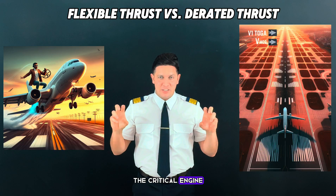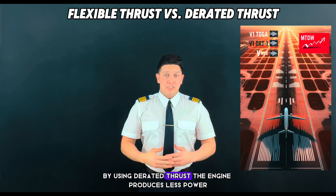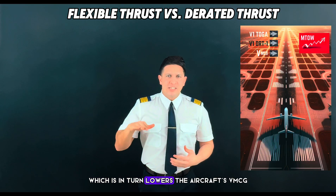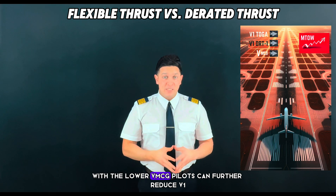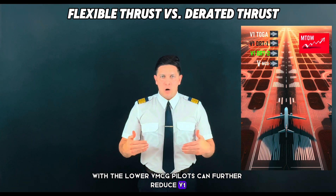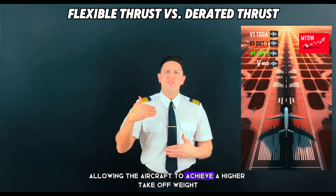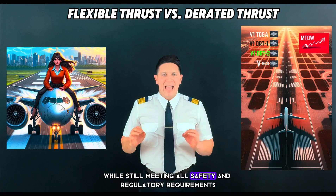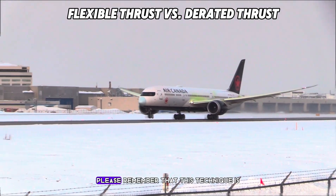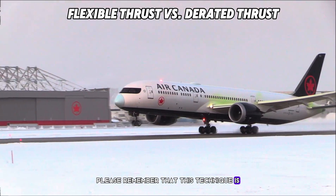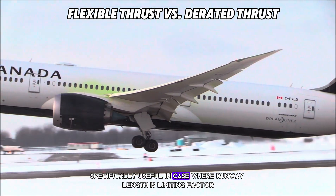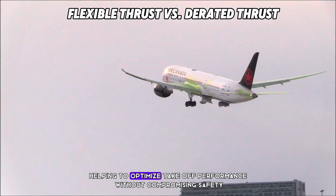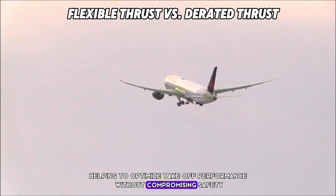By using derated thrust, the engine produces less power, which in turn lowers the aircraft's VMCG. With a lower VMCG, pilots can further reduce V1, allowing the aircraft to achieve a higher takeoff weight while still meeting all safety and regulatory requirements. Please remember that this technique is specifically useful in cases where runway length is a limiting factor, helping to optimize takeoff performance without compromising safety.